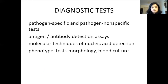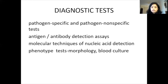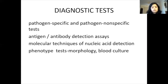Diagnostic tests for acute febrile illnesses can be pathogen-specific or pathogen-non-specific. These include antigen or antibody detection assays, molecular techniques of nucleic acid detection, and phenotypic tests which rely on morphology — for example, blood smear for malaria, or blood culture to localize a specific pathogen.